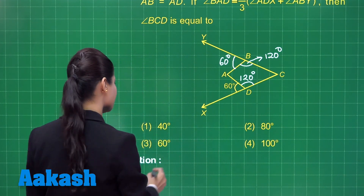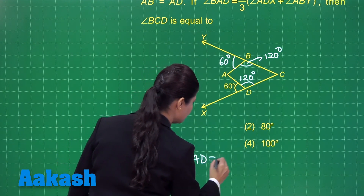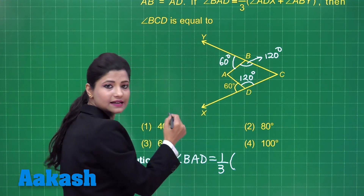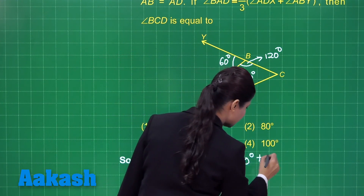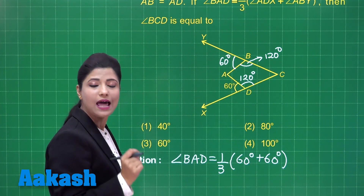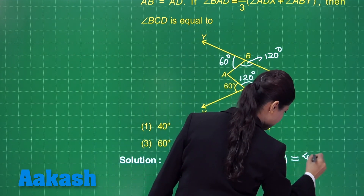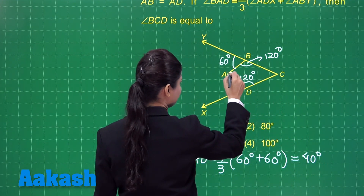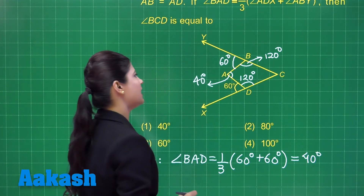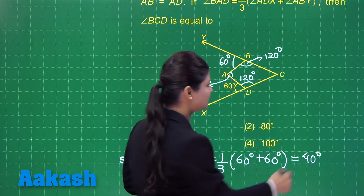As per the condition in this question, angle BAD equals one third of the sum of angles ABY and ADX. Both ABY and ADX measure 60 degrees each, so 60 plus 60 gives 120. Dividing by 3 gives 40 degrees. So angle BAD measures 40 degrees. Knowing three angles of the kite, we can find the fourth angle.